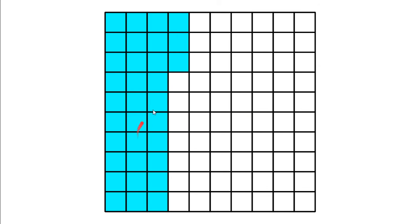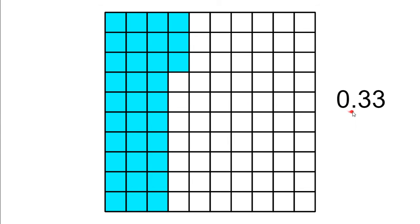This is broken into a hundred pieces. So 33 out of a hundred are shaded in. So that's going to be 33 hundredths. When I make decimals to the hundredths place, I need two digits after the decimal point. So it looks like this: zero and 33 hundredths.